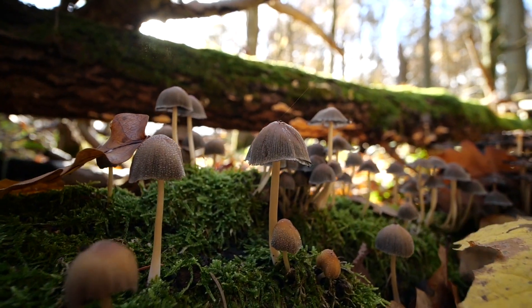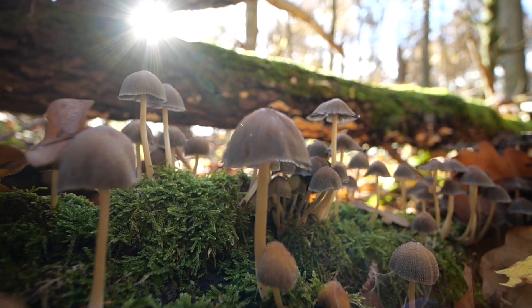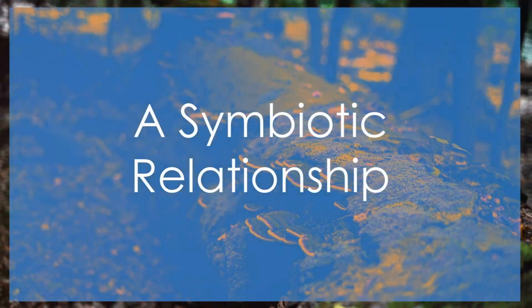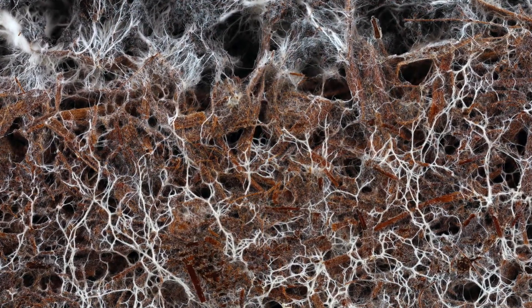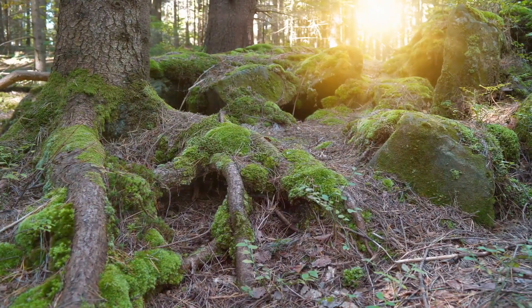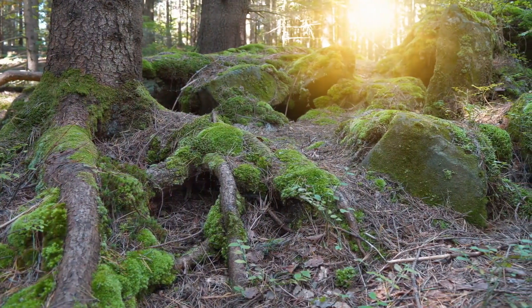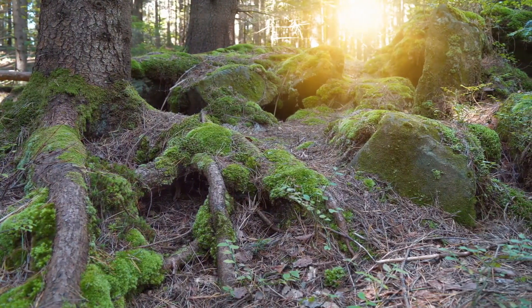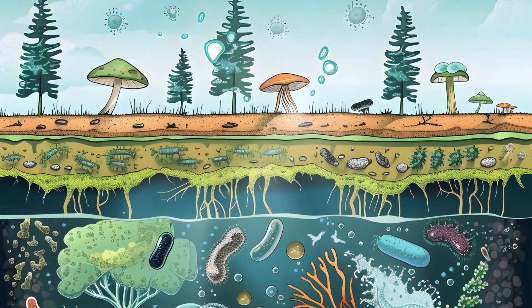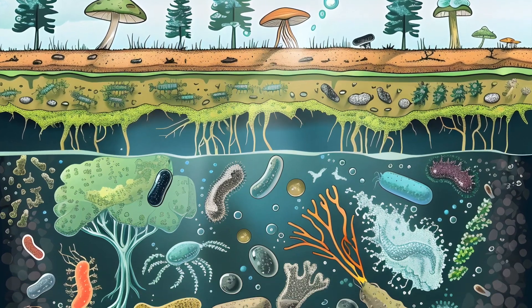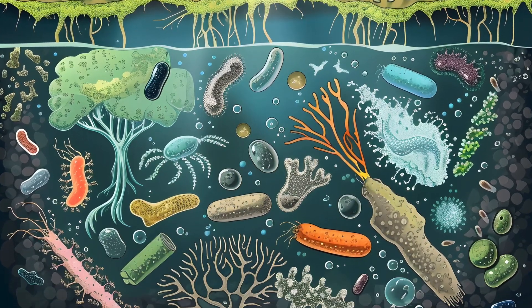Fruit bodies vary significantly in shape, size and color across different fungal species. One of the most remarkable aspects of fungi is their ability to form mycorrhizae, symbiotic associations with plant roots. The term mycorrhiza, plural mycorrhizae, is derived from Greek, meaning fungus root. This symbiosis is vital for the health and growth of most terrestrial plants. In mycorrhizae relationships, the fungal mycelium extends the root system of the plant, significantly increasing its ability to absorb water and essential nutrients, particularly phosphorus. In return, the plant supplies the fungus with carbohydrates produced through photosynthesis.